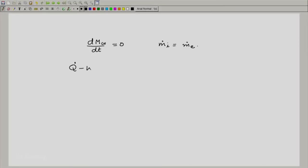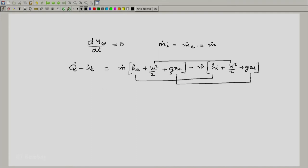So for the first law, similarly we have dE_cv/dt is 0. What we will do is we will transpose q dot and w dot s in the equation to the left side and write it as follows. That is q dot minus w dot s is equal to m dot. Notice that I am writing only m dot. This is because the mass flow rate coming in is the same as mass flow rate going out. So I will not put a subscript i or e. I will write it as m dot times [h_e + v_e^2/2 + gz_e] minus m dot times [h_i + v_i^2/2 + gz_i]. And often one combines these terms and writes as follows.